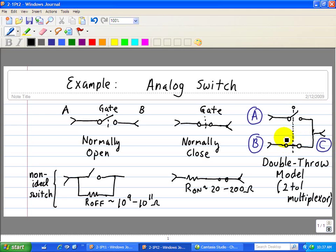When we do apply a voltage, then we connect A to C. Again, this is a double-throw model and this is known as a 2 to 1 multiplexer.